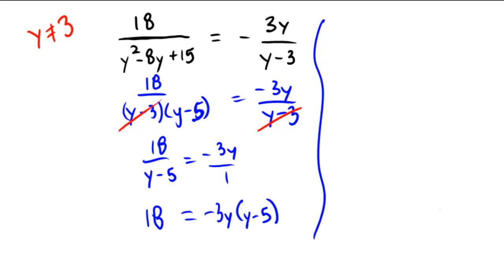So if I distribute now, I'll have 18 equals negative 3y squared plus 15y.